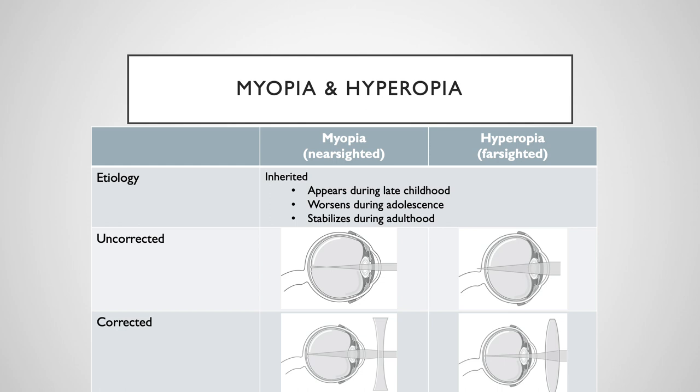In myopia, which is commonly called nearsightedness, the focal point lands anterior to the retina. This results in impaired distant vision. Hyperopia is the opposite. The focal point is posterior to the retina. If an individual's process of accommodation cannot compensate for this, it will result in an impaired near vision, called farsightedness.